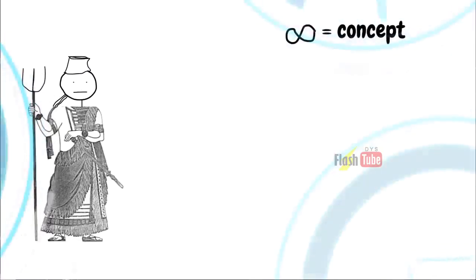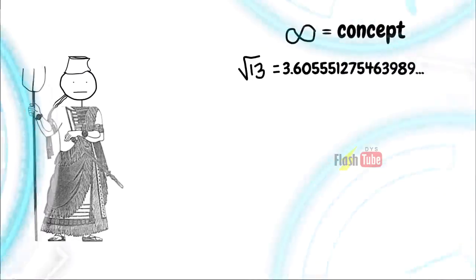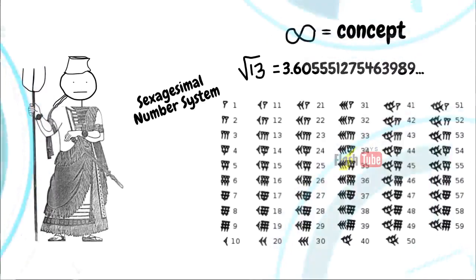Babylonians offered an early intuition on the infinite process. They could determine the square root of a rational number to any number of decimal places. A contributing factor was their sexagesimal number system that allowed for a compact notation.